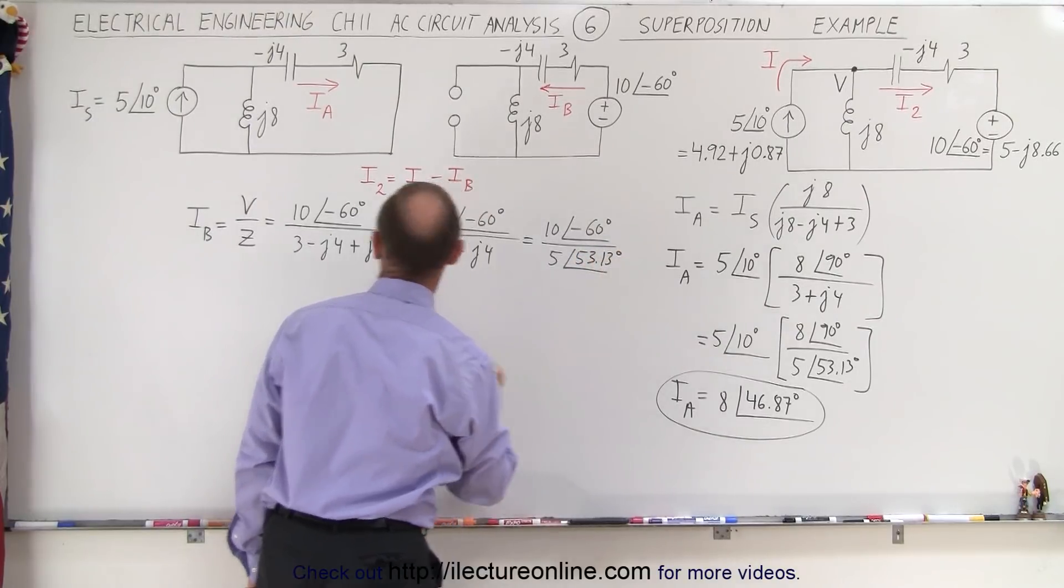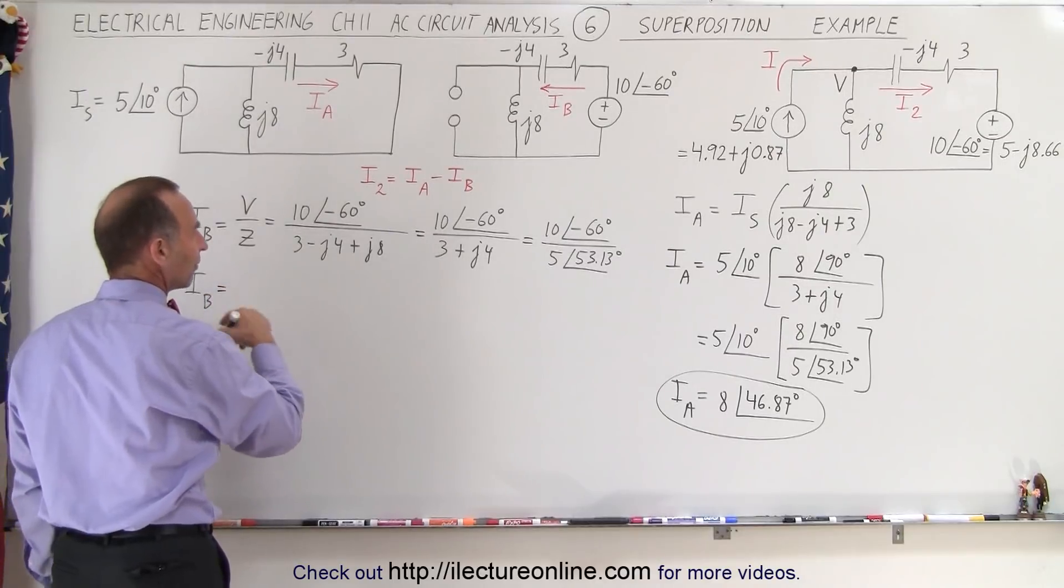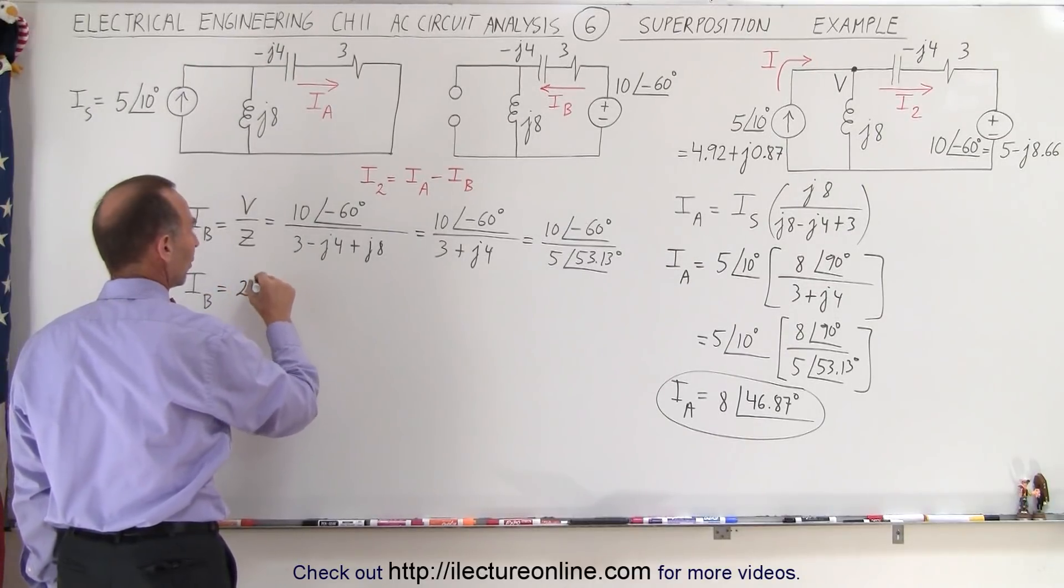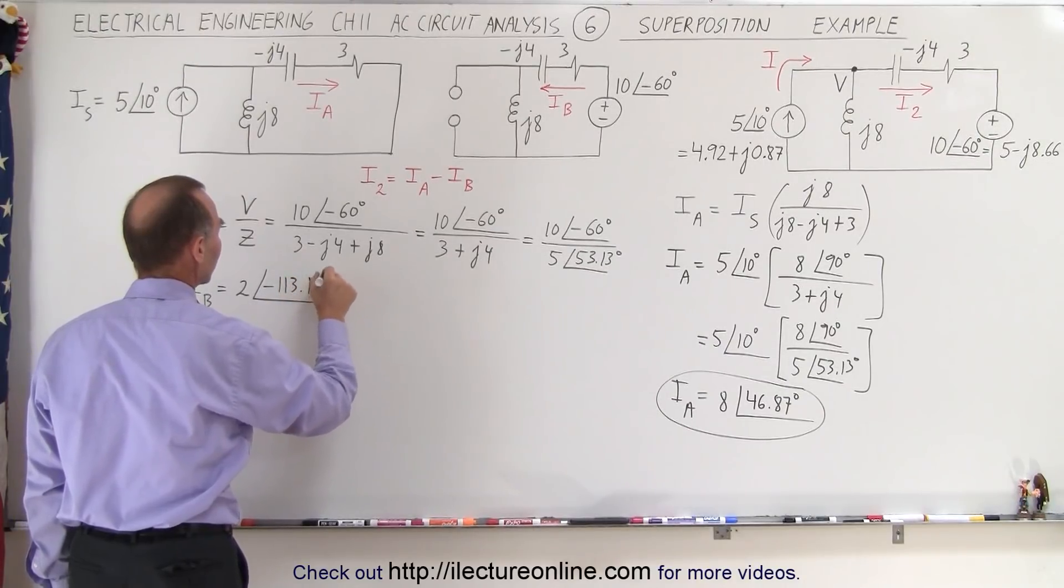And so I sub B is equal to 10 divided by 5 which is 2 with a phase angle of minus 113.13 degrees.